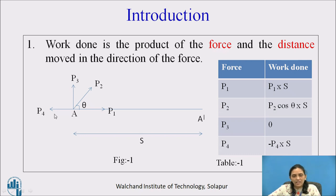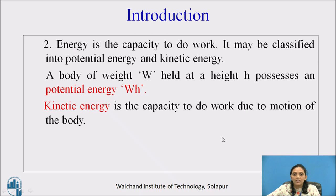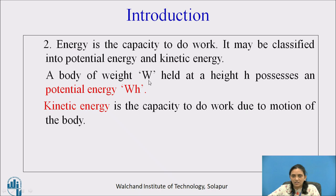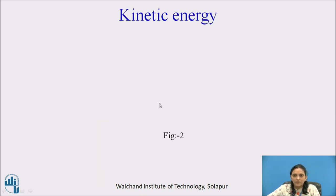Now see P4 — P4 is in the x direction but exactly in the opposite direction. So the work done by force P4 is minus P4 into S. Now, what is energy? It is the capacity to do work. It may be classified into potential energy and kinetic energy. Potential energy is the capacity to do work due to the position of the body. A body of weight W held at height h possesses potential energy W into h. Kinetic energy is the capacity to do work due to the motion of a body.